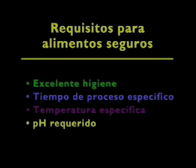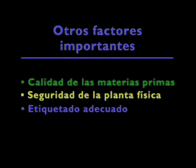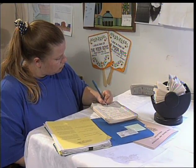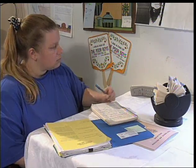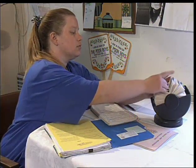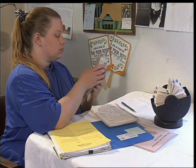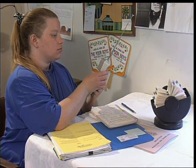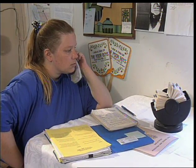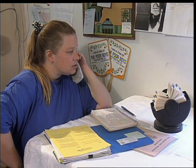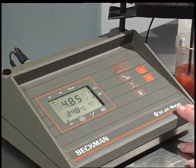Diseñe un programa especial para sus productos y para su establecimiento con un profesional en ciencia y tecnología de alimentos. Identifique los puntos críticos de contaminación y repase este proceso frecuentemente. Si no comprende alguna etapa del procedimiento, consulte a los especialistas en tecnología de alimentos de la Universidad Estatal de Nuevo México. Mantenga sus apuntes sobre su procedimiento en algún lugar cercano para una consulta rápida.